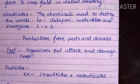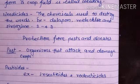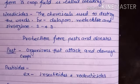The spraying of chemicals of various kinds gives protection to the crops against these diseases. For example, a group of pesticides called fungicides are used to destroy fungi. Pesticides must be used with caution, otherwise they can cause damage.